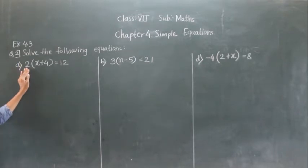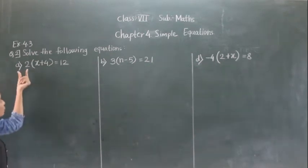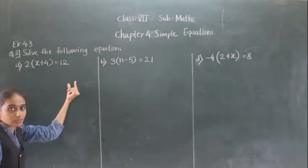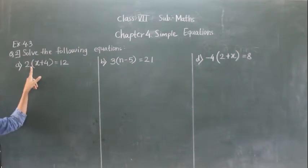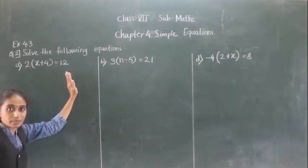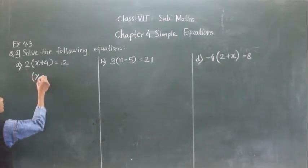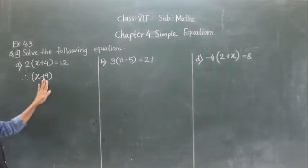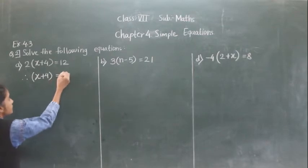If we transfer 2 to the right hand side, then it will become divided. Here 2 is multiplied. If it comes to this side, it will become divided. So what remains here is x plus 4. We are going to transfer 2 to the right hand side.